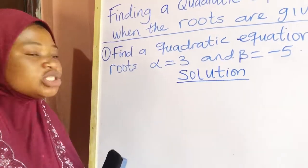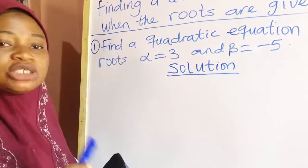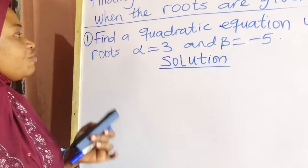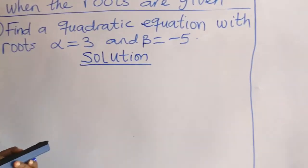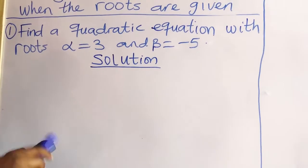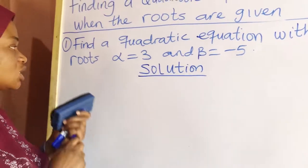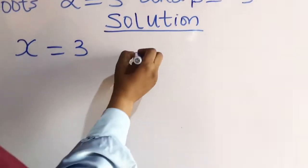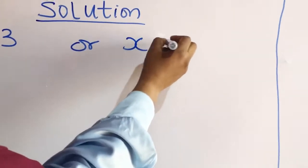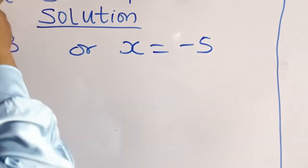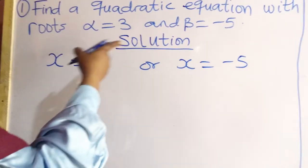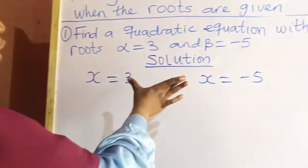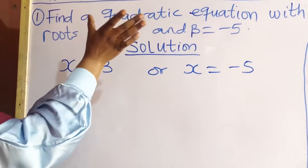It's possible to find the quadratic equation when you are given the roots of that equation. Find a quadratic equation with root alpha equal to 3 and beta equal to minus 5. This means that x is equal to 3 or x is equal to minus 5, and alpha and beta are the roots of this quadratic equation. We want to use these roots to find the quadratic equation itself.